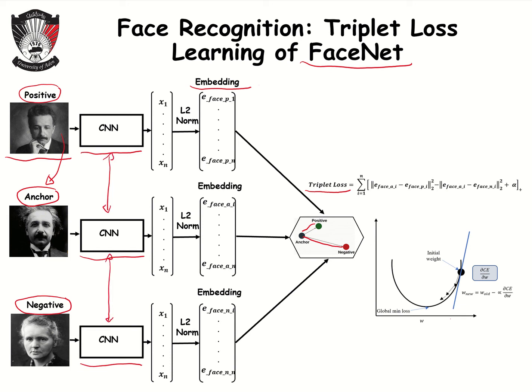It should be noted that the CNNs here have the same weights and the same architecture, so they are identical. During training we have two phases. The first is forward propagation, where these faces are mapped to a 1D vector or face embedding, after which we compute the triplet loss using this formula.